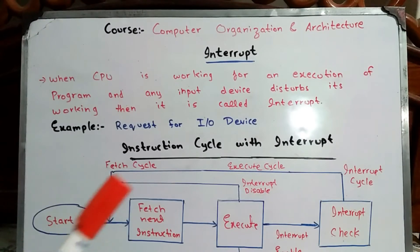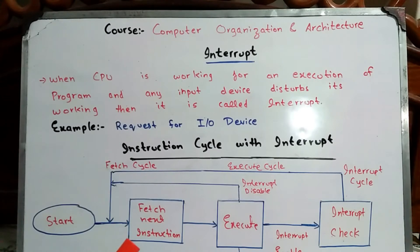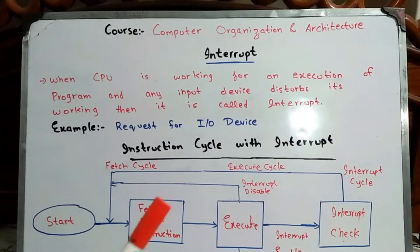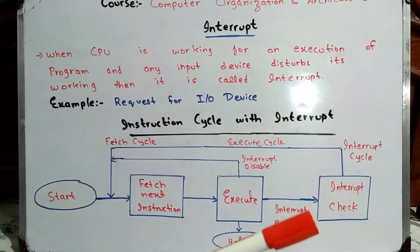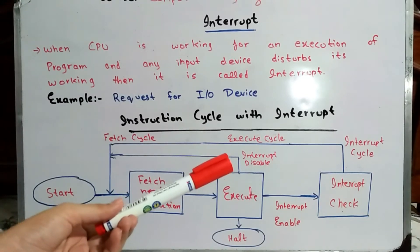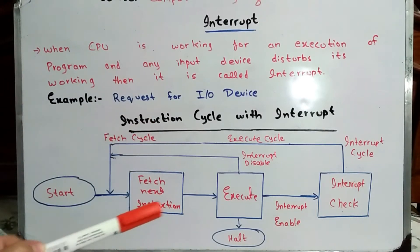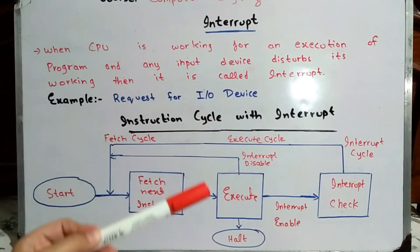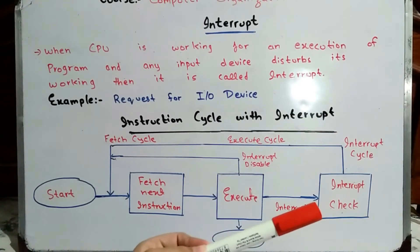So let us discuss the instruction cycle with interrupt. First, the instruction is fetched from main memory so that it can be executed. When we execute, we then check for an interrupt. This is the fetch cycle, where the instruction is fetched. This is the execution cycle, where the instructions are executed. And this is the interrupt cycle, where the interrupt will be handled or checked.